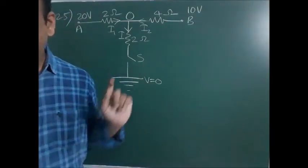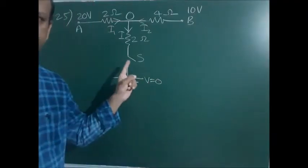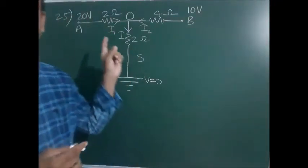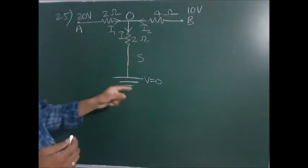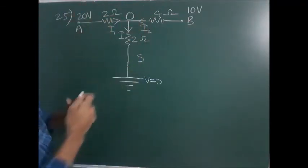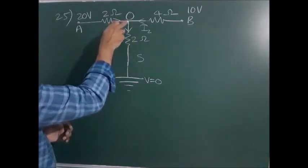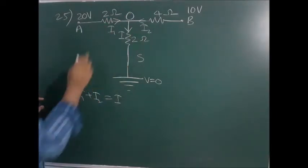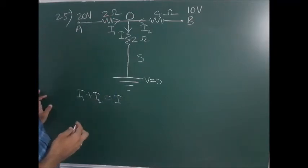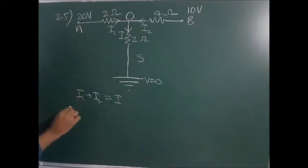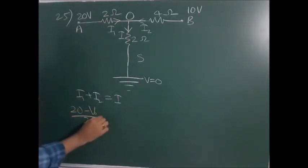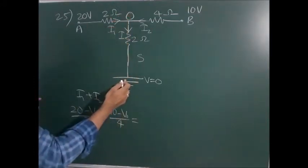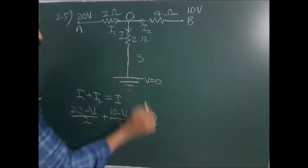Question 25: Find the current through switch S when it is closed. At point A there is 20 V, at point B there is 10 V, and there is earthing at 0 V. At junction point O, applying Kirchhoff's first law: I1 + I2 = I. I1 = (20 - V0) / 2 Ω, I2 = (10 - V0) / 4 Ω, and I = V0 / 2 Ω.